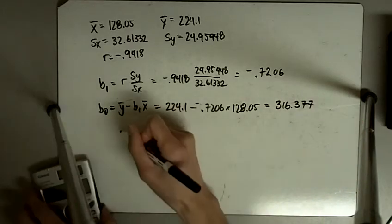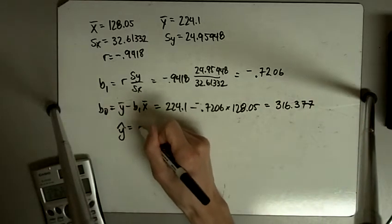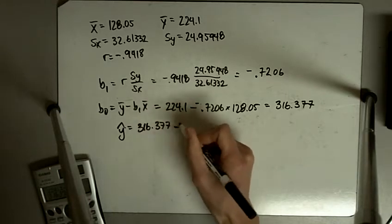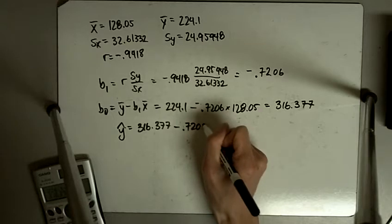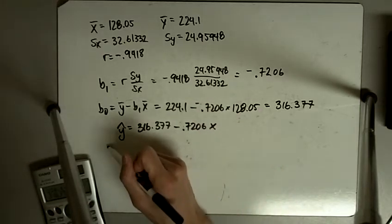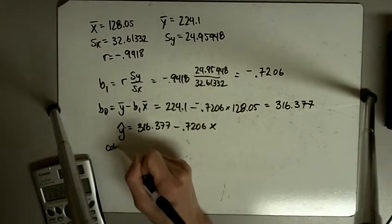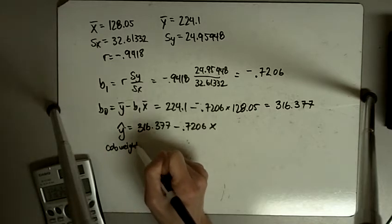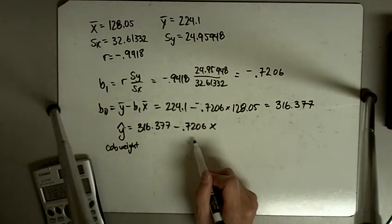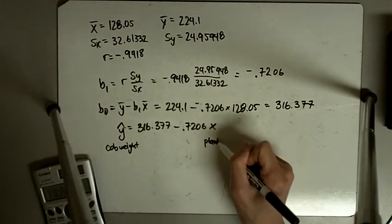So my Y hat is going to be 316.377 minus 0.7206X. So my predicted cob weight is going to be 316.377 minus 0.7206 times my plant density.